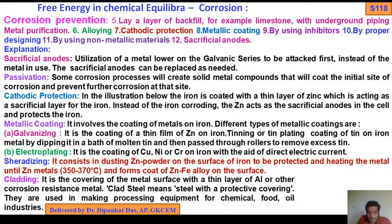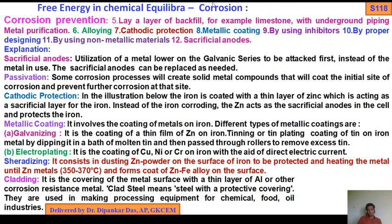Continuing corrosion prevention — number five: layer of backfill, for example limestone, with underground piping and metal purifications. Number six: alloying. Number seven: cathodic protection. Number eight: metallic coating. Number nine: by using inhibitors. Number ten: by proper designing. Number eleven: by using non-metallic materials. Number twelve: sacrificial anodes. These are the corrosion prevention methods: alloying, cathodic protection, metallic coating, inhibitors, proper designing, non-metallic materials, and sacrificial anodes.